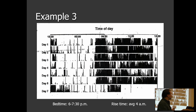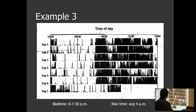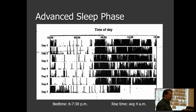Example three: the tracing shows a typical bedtime around 6 to 7:30 p.m., with a rise time of around 4 a.m. Looking for general trends rather than outliers, this is clearly an advanced sleep phase pattern — going to bed early and waking up early, out of sync with the typical schedule in the opposite direction from delayed sleep phase.